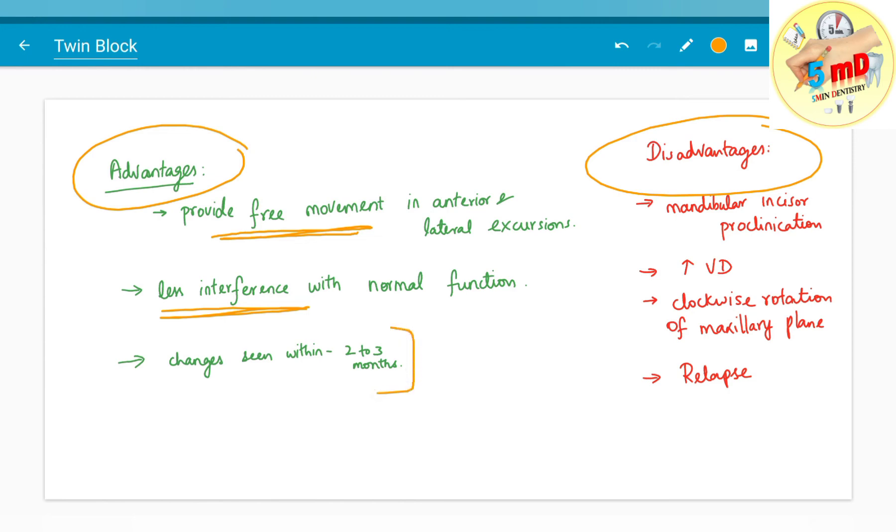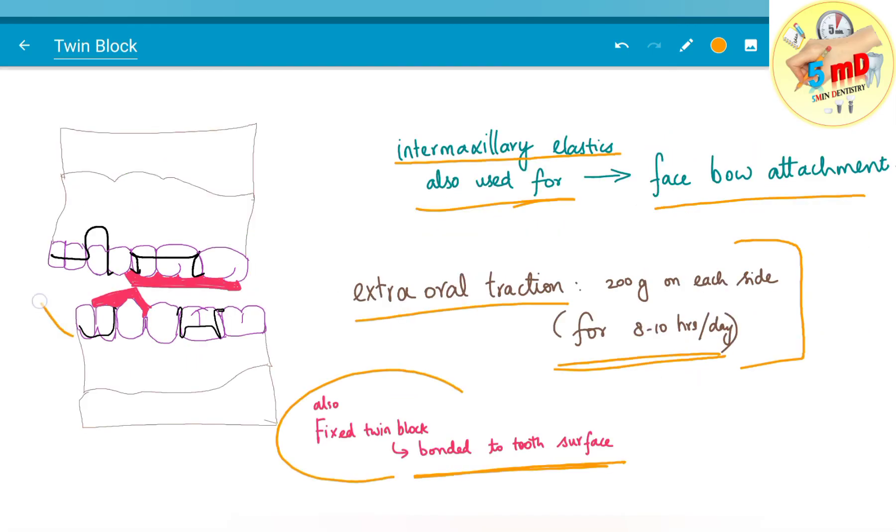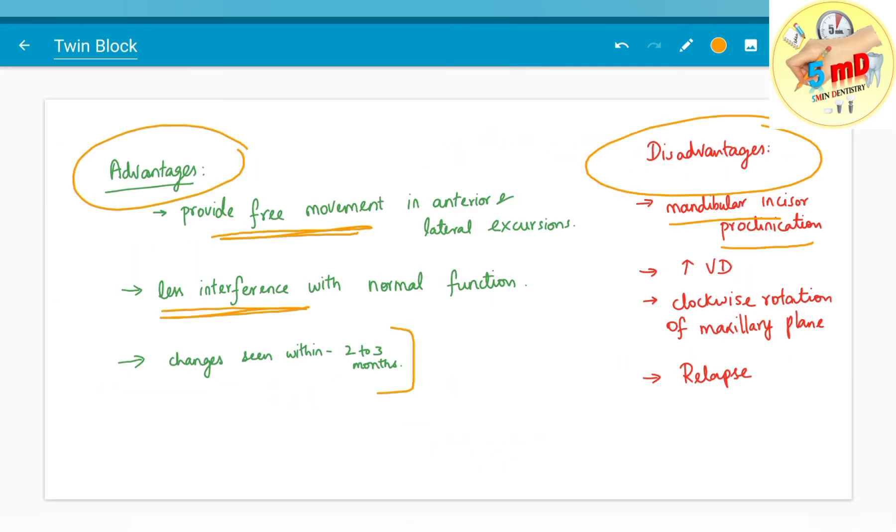The changes are seen within 2 to 3 months. The main disadvantages include mandibular incisor proclination. Mandibular incisors are prone to procline after the twin block treatment.